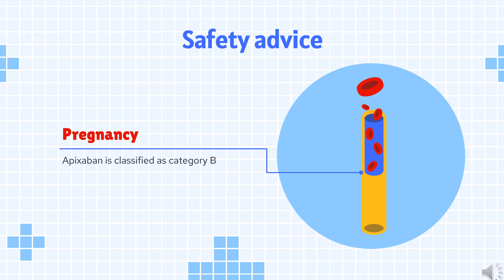Safety Advice: Apixaban is classified as pregnancy Category B, as animal studies did not indicate direct or indirect harmful effects with respect to reproductive toxicity.